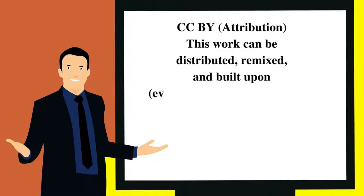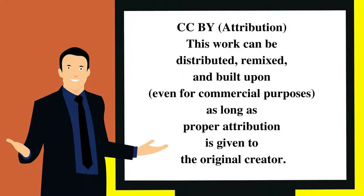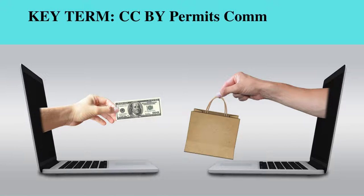The first is called a CC BY license. That enables the work to be distributed, remixed, and built upon, even for commercial purposes, as long as proper attribution is given to the original creator. CreativeCommons.org has examples on how to give proper attribution. The 'BY' in the name refers to the attribution, which is a critical part of the license — failure to do so could violate the license and therefore violate the underlying copyright. The other notable term of this license is the permission to use the work commercially without any upfront payment or royalty due — it's completely free.